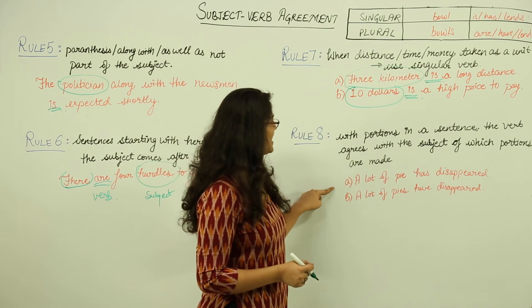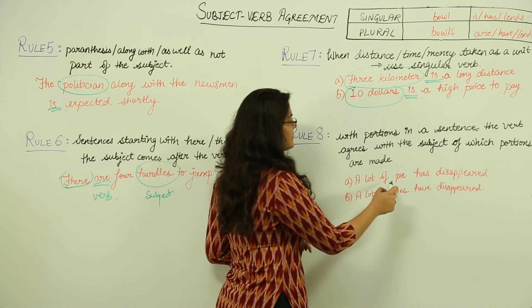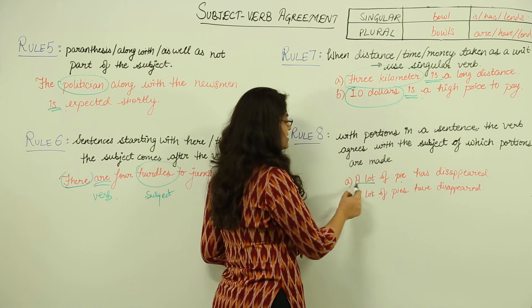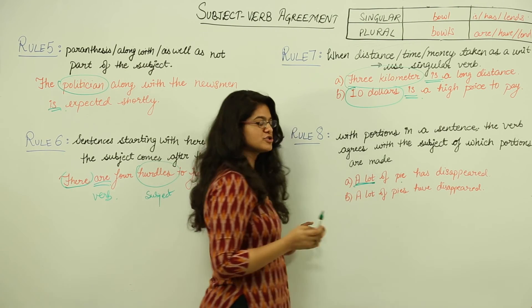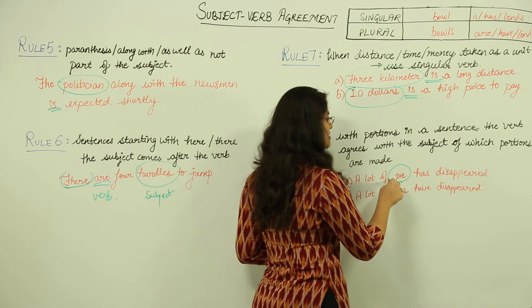A lot of pie has disappeared. A lot of pies have disappeared. Here the portions are made out of the pie. A lot is a unit of portion, so portions are made out of the pie. Pie here is the subject.